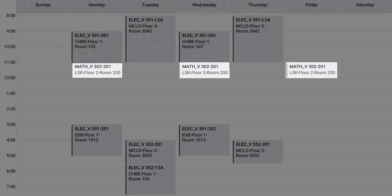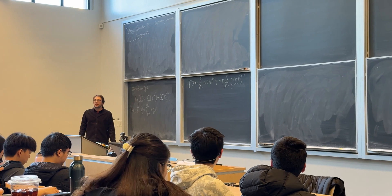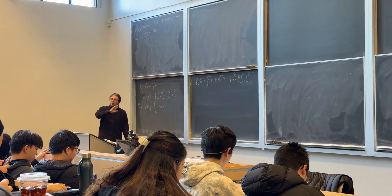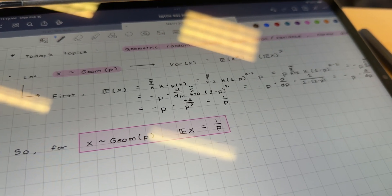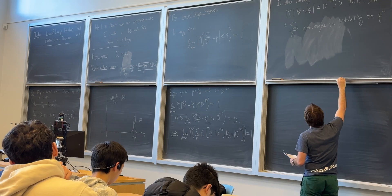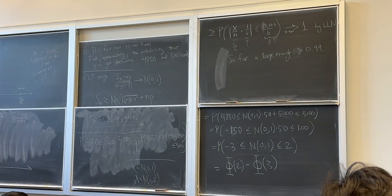Now let's get into how Math 302 will be structured for any given week and the materials that you'll need for this course. Each week, you will have 3 hours of lectures, where the professor will go through concepts related to probability. Depending on who your professor is, they may either write their lecture notes on a chalkboard in real time, or have lecture slides that they will go through with blank spots for example problems. Math 302 lectures go by very fast, so there is not much time to digest concepts during class, and it will often feel like the professor is rushing.